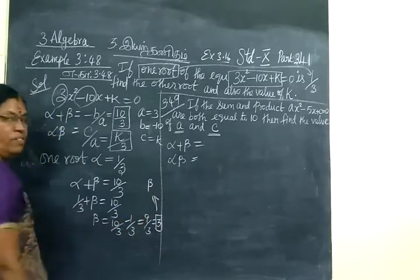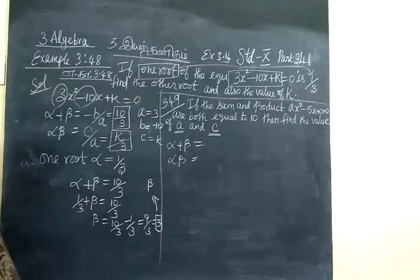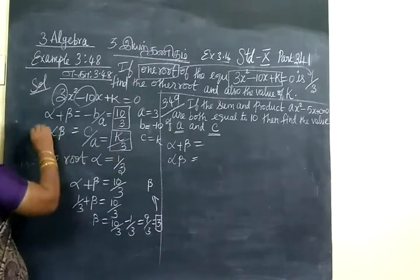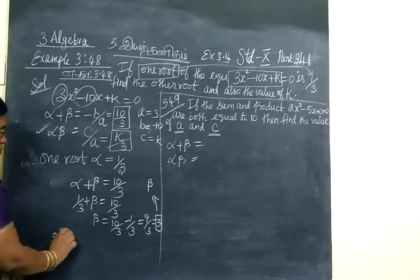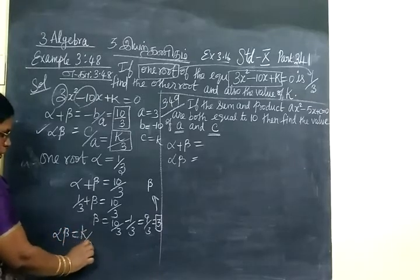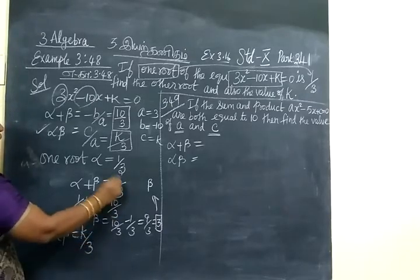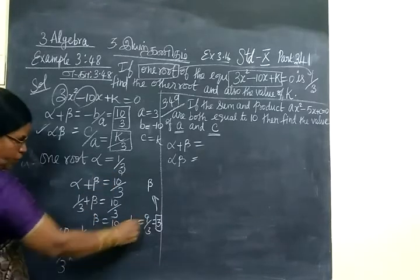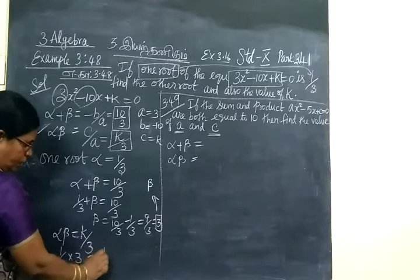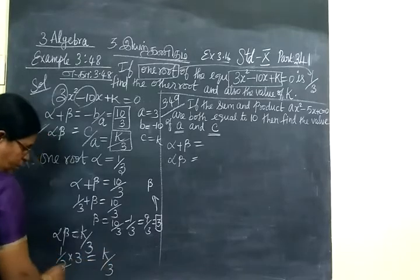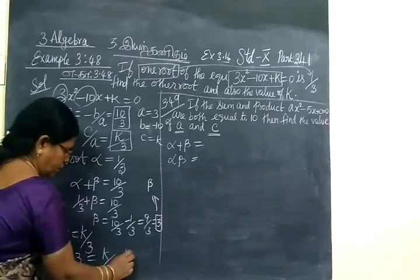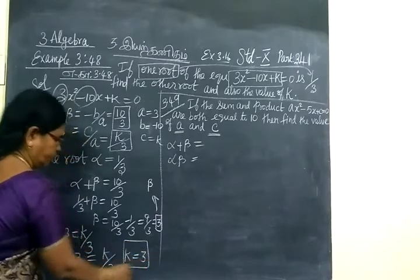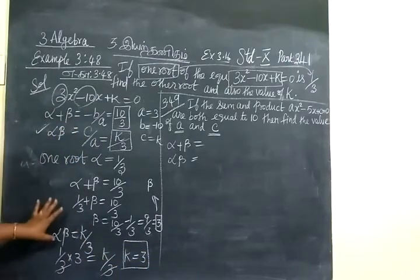We have found the value of beta. Next, you have to find the value of k. You know product of the roots: alpha times beta equals k by 3. Alpha is 1/3 and beta we found as 3, so 1/3 times 3 equals k by 3. The 3s cancel, which implies k equals 3. It is a very simple sum.